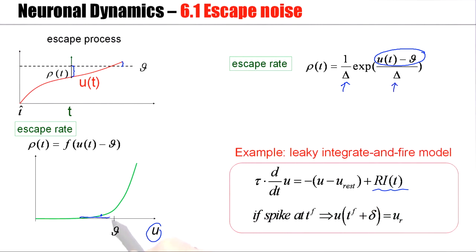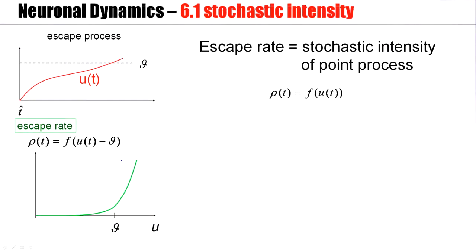If I decrease Δ, then it becomes steeper and steeper. So here is our first example of a stochastic intensity—an exponential dependence upon U minus θ.